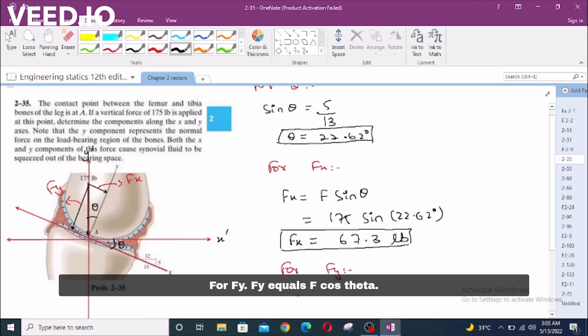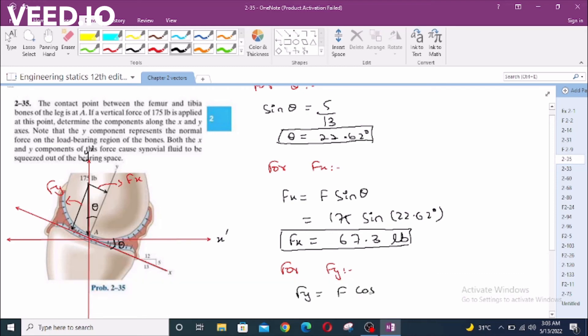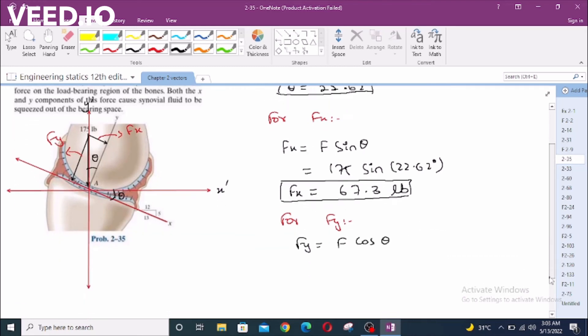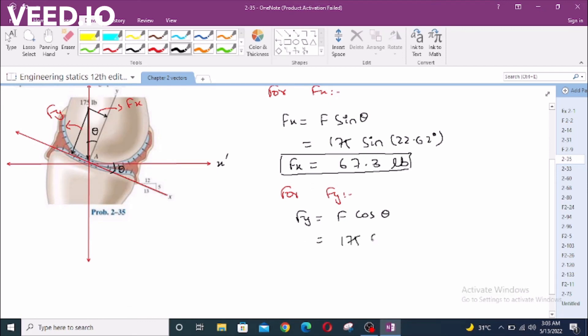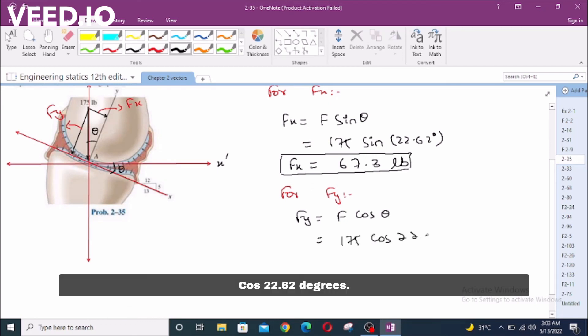For Fy: Fy equals F cos Theta. F equals 175 LB times cos 22.62 degrees.